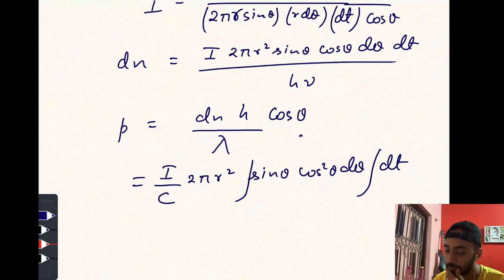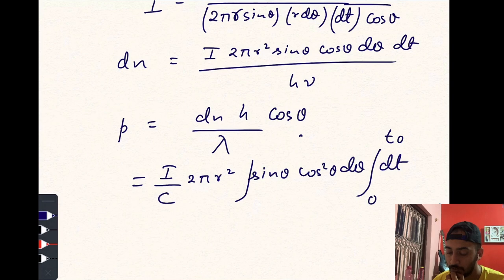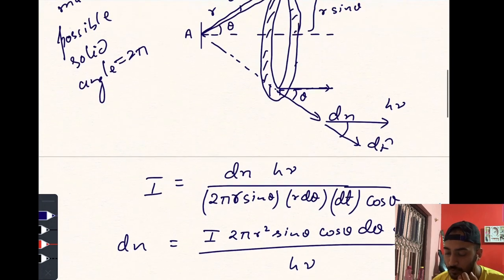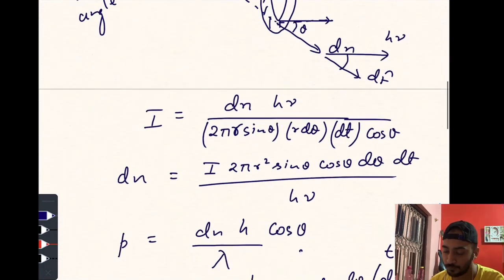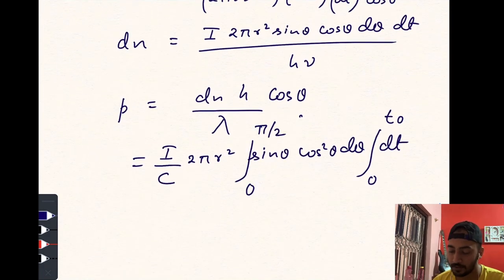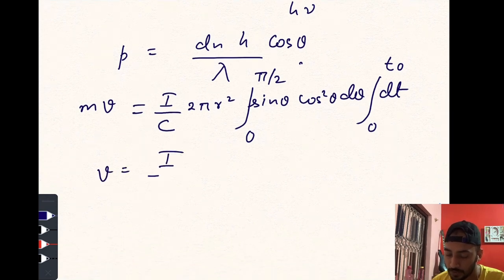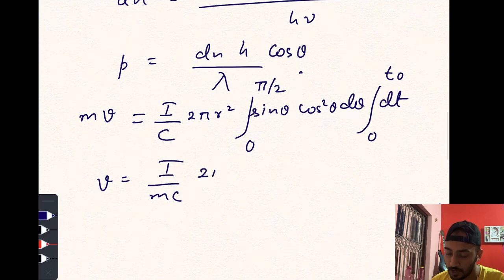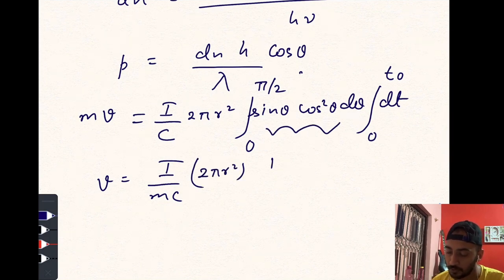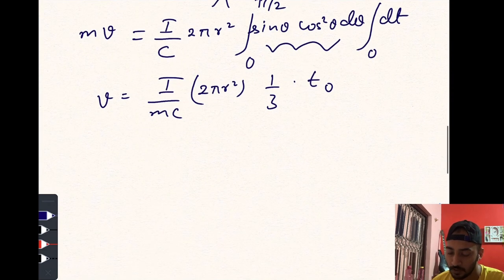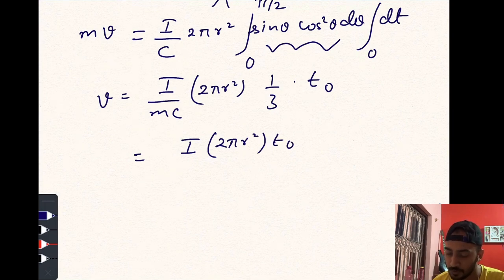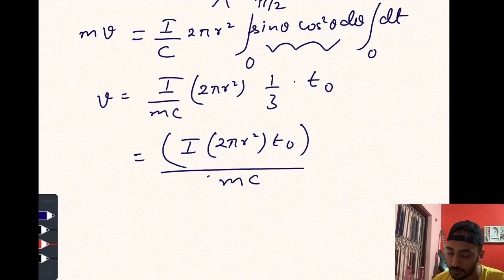Let us consider that the whole cubical block takes a time t₀ to lose all of its energy Q, and the possible values of θ range from 0 to π/2. That rises the velocity or increases the momentum of the block from 0 to m times v. So v becomes I/(mc) × 2π r² × integration of this thing would be 1/3, times t₀. So I × 2π r² × t₀ divided by mc × 3.